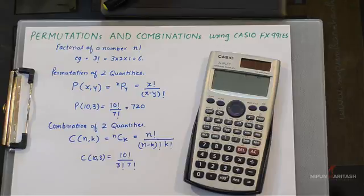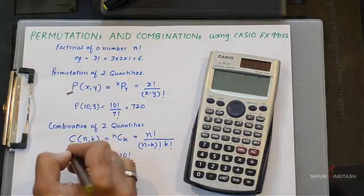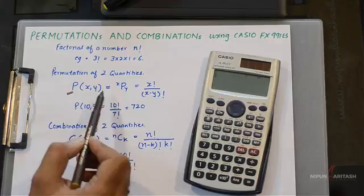Now a little bit of basics about permutations and combinations. I have written down the formula for permutation and combination of two quantities. If you want permutation of two numbers x and y,